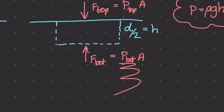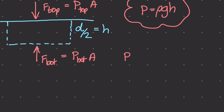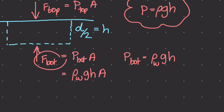What about F bottom? We have P bottom times A, and A is just the surface area of that surface. Pressure bottom is the mass density of the fluid that got displaced — in this case, water — times g, our gravitational constant, times h, which in this case is D over 2. So F bottom is rho times g times h times A.